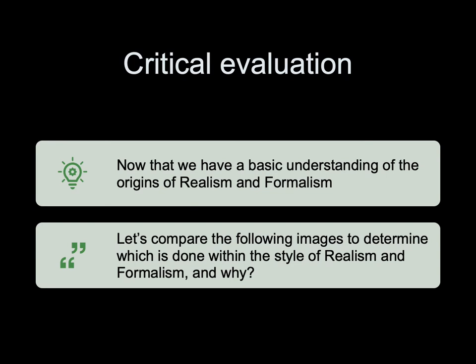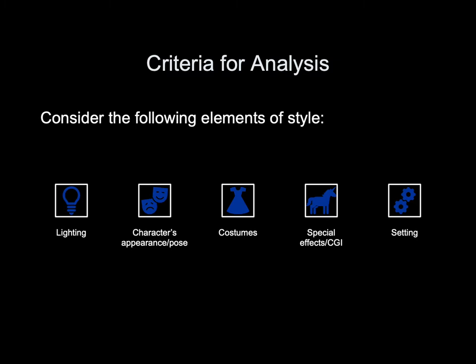Now that we have a basic understanding of the origins of realism and formalism, let's compare images to determine which is done within each style and why. Whenever you do an analysis, you need a set of criteria. Consider the following elements of style: the lighting, the character's appearance, their pose, the costumes, the presence or absence of special effects or CGI, and where the action is taking place.